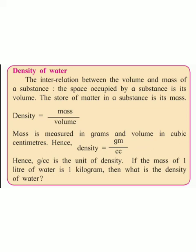Gram per cc is the unit of density. If the mass of one liter of water is one kilogram, then what is the density of water? You have to find out this using this formula.